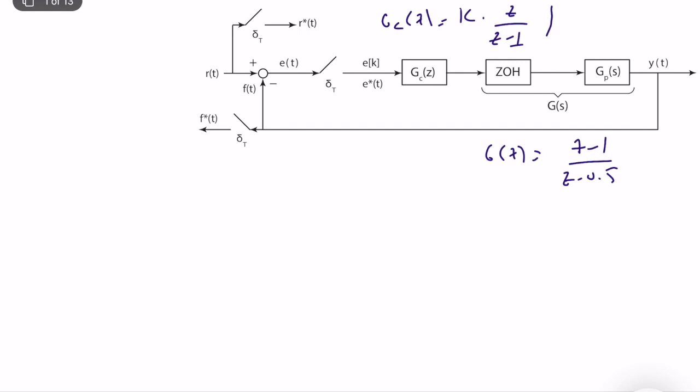So what we do is we first start with computing g_ol(z), the feed forward transfer function, which is the transfer function from error to the discretized version of f(k). As you can see, this is equal to k times z divided by z minus 0.5. So this is the g_ol(z), that's good.